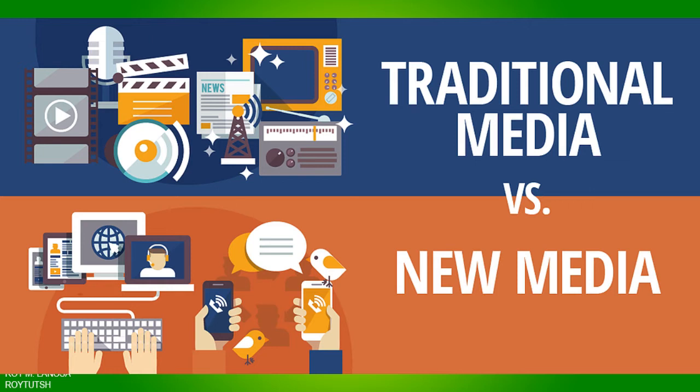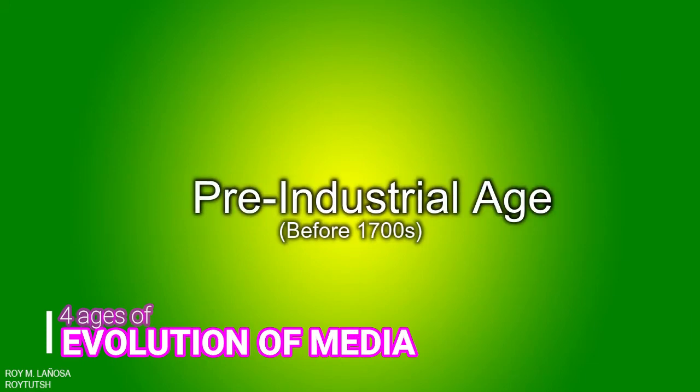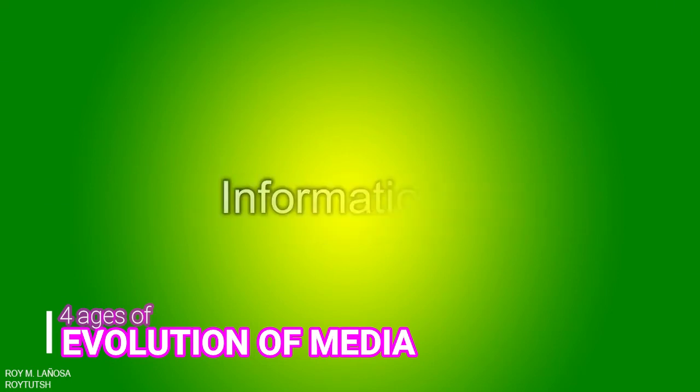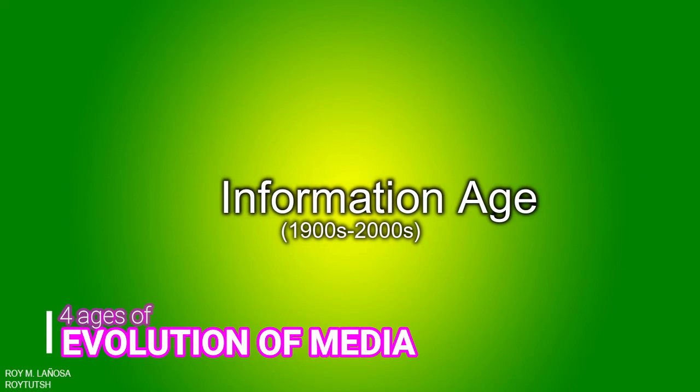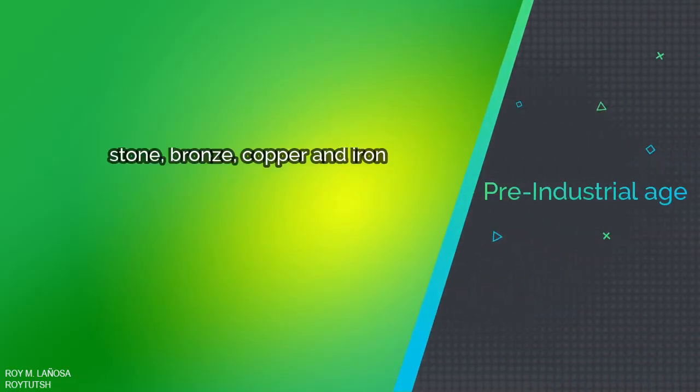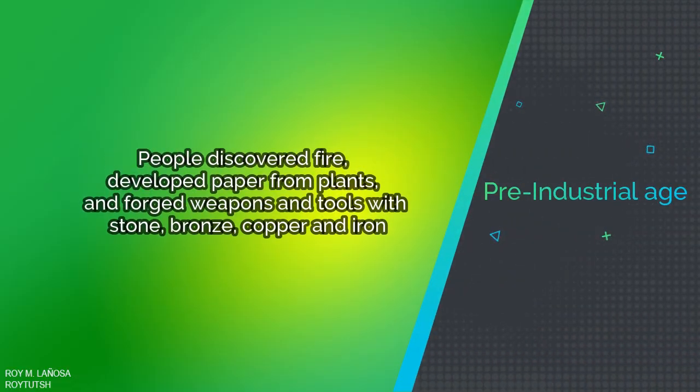There are four ages of evolution of media: first, the Pre-Industrial Age; second, the Industrial Age; third, the Electronic Age; and fourth, the Information Age. In the Pre-Industrial Age, people discovered fire, developed paper from plants, and forged weapons and tools with bronze, stone, copper, and iron.